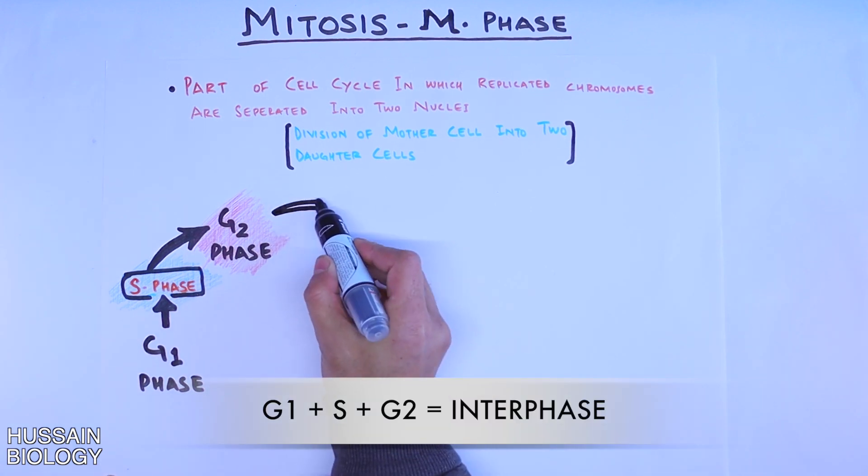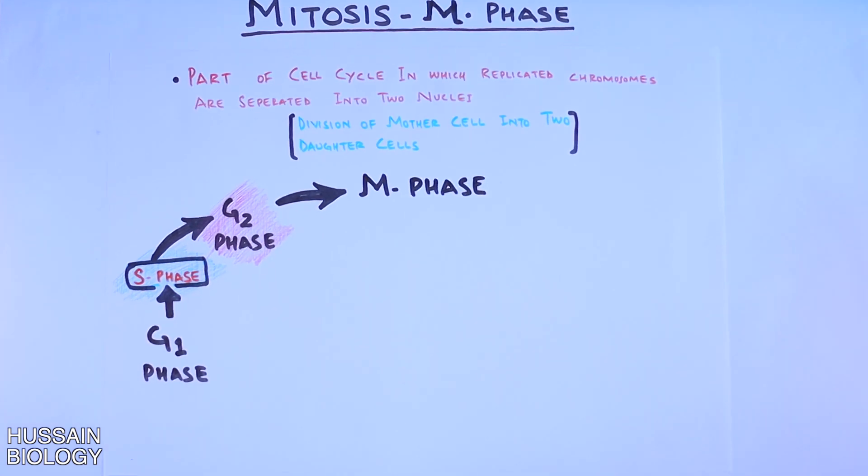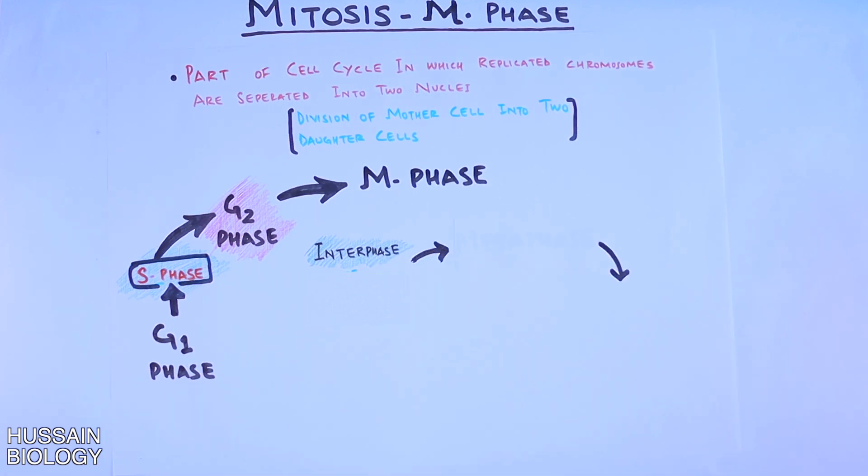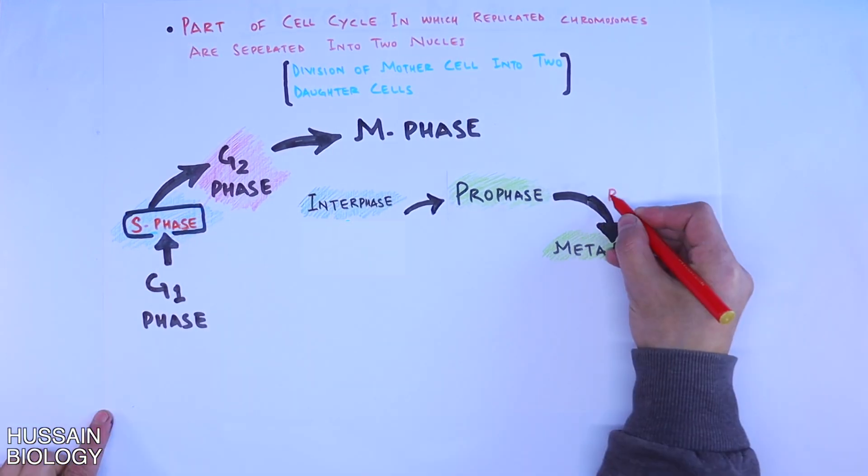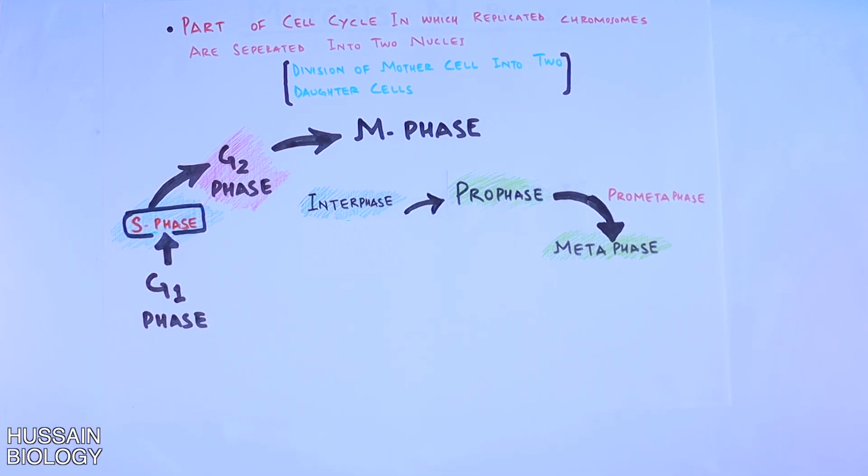From G2 phase, the cell jumps into M phase, which we are discussing here. From interphase, the cell gets into M phase. The first phase of mitosis is prophase, followed by metaphase. But remember, in between prophase and metaphase, we have prometaphase if we get into more details.